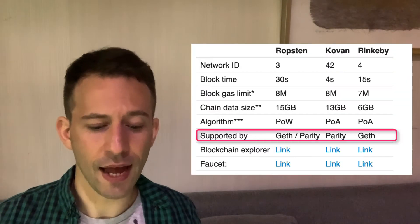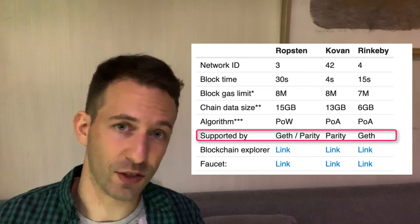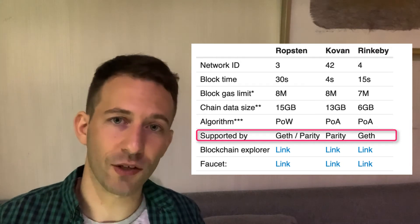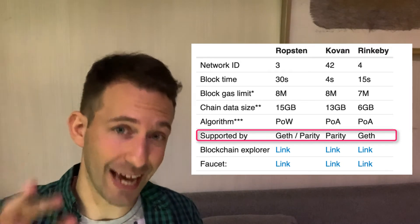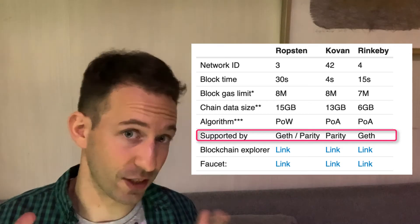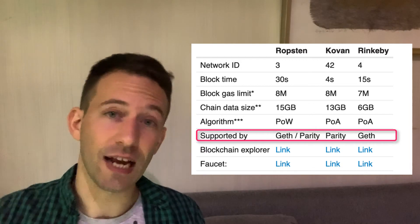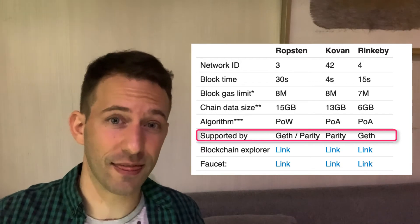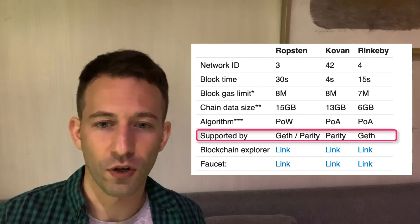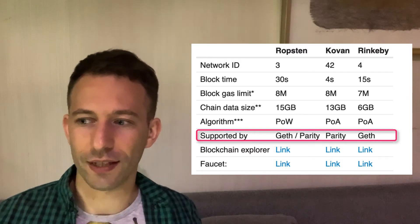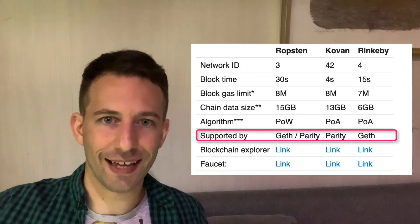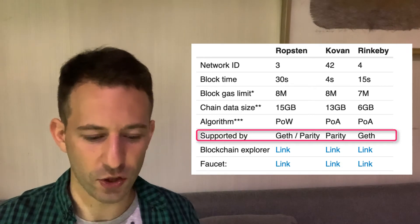The downside of proof-of-authority is that it's not the same thing as Mainnet, so that's a bit of a problem. Then we have which Ethereum clients each testnet supports. Ropsten supports the two major clients, Geth and Parity, so that's good. But Kovan only supports Parity and Rinkeby only supports Geth. That's not ideal for testing because in the real network both Parity and Geth run on Mainnet.